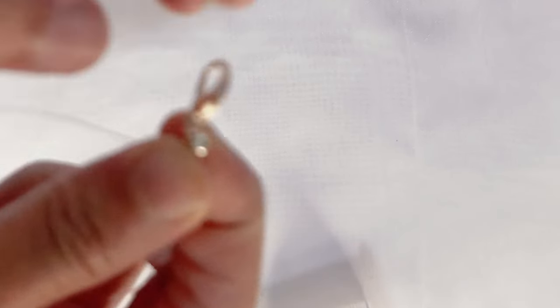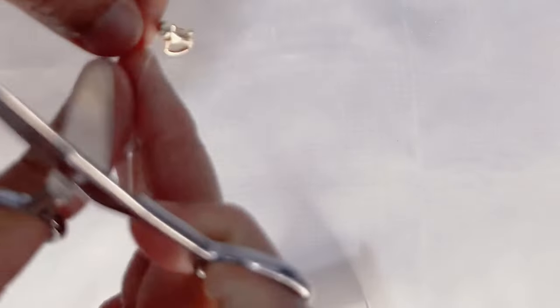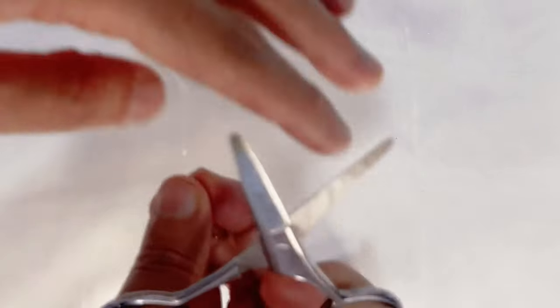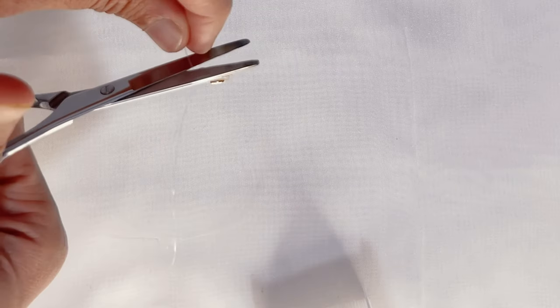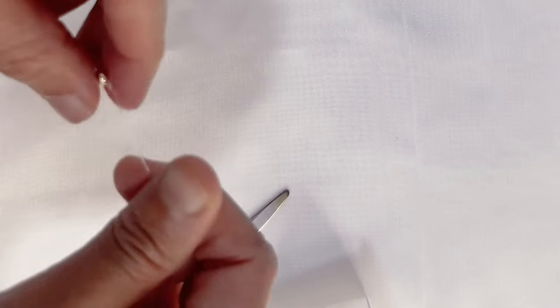As this is a transparent thread, you need glue. Because the knot can be opened. So add some glue here. And cut the excess thread. And start making your necklace.